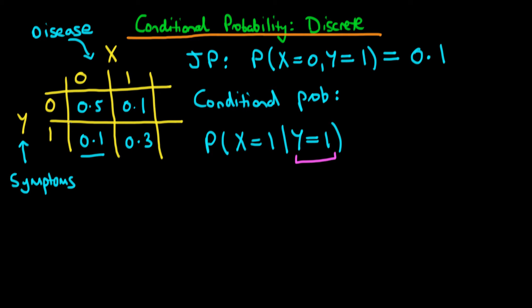Because we know they're symptomatic, we are constraining ourselves to the space I'm highlighting here, which corresponds to the bottom row. This now represents all of the possible outcomes, so the probabilities within this space have to sum to one. But at the moment they don't — if I add these two together I just get 0.4. So we're going to talk about a resolution to this issue.